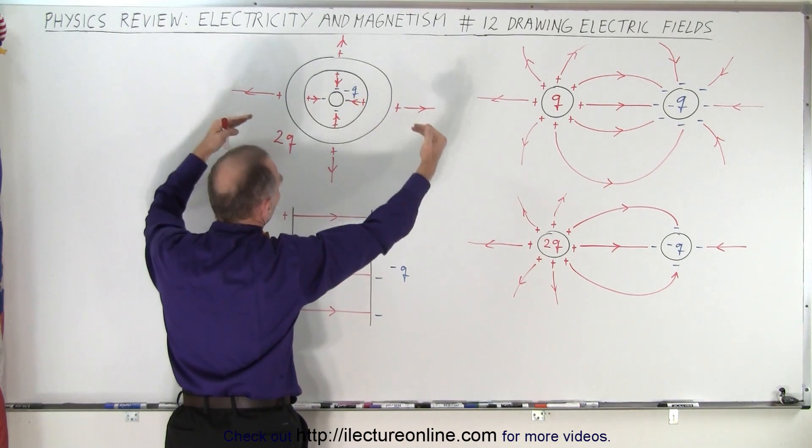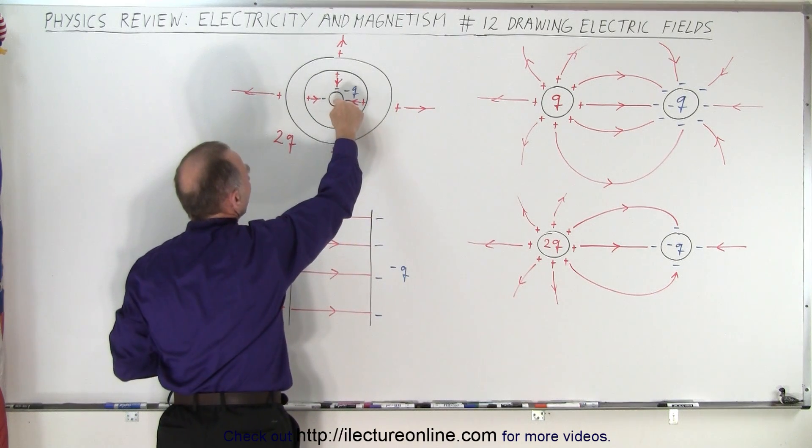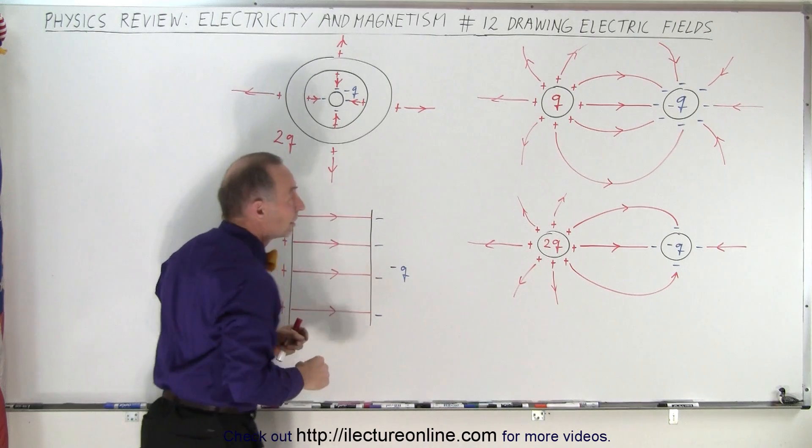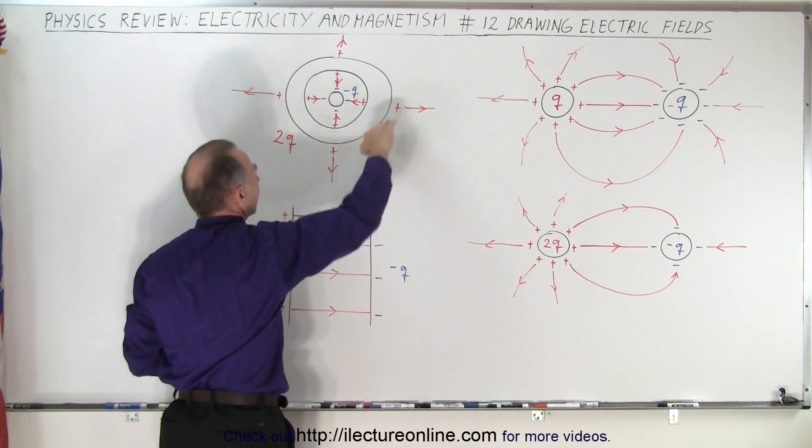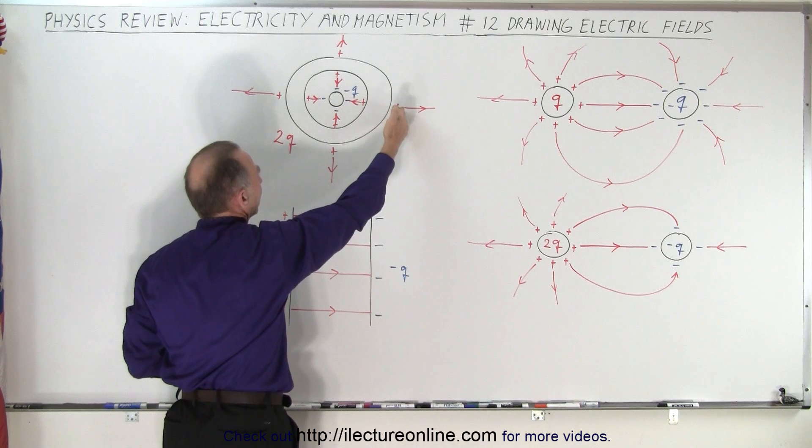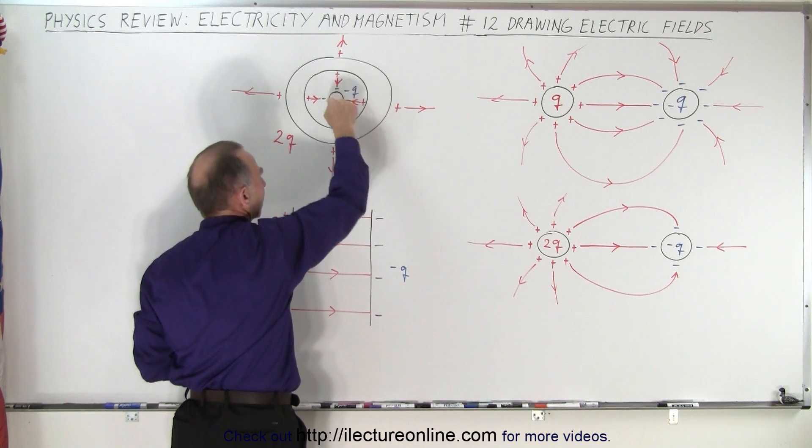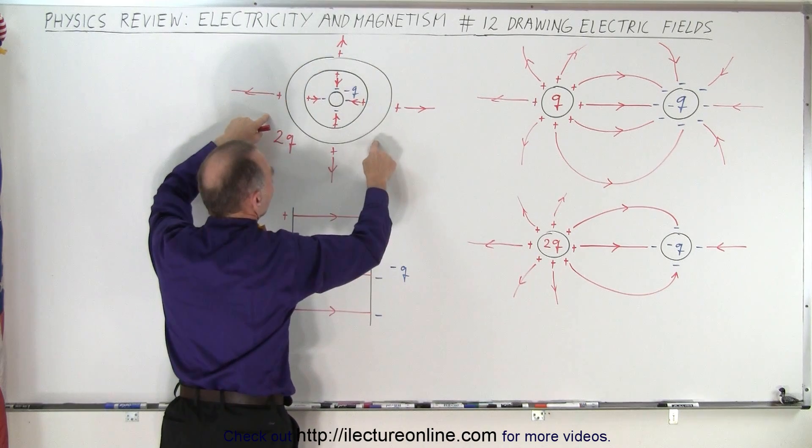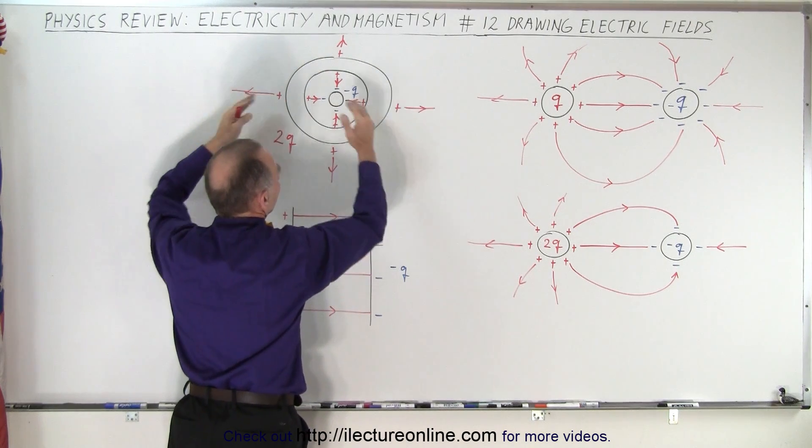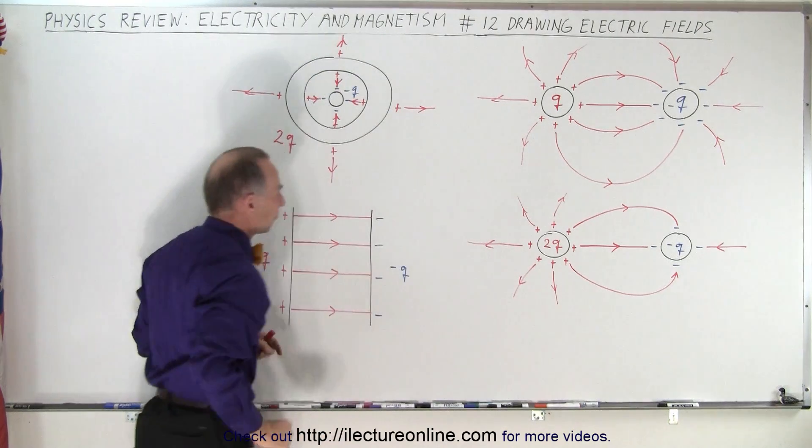So you see the lines going from positive to negative. Notice there's no electric field inside here. And there's no electric field inside of here, because the charges that are on the outside are not being attracted to the negative charges here, because that's already taken care of by these four. And those will distribute themselves on the outside surface as far away from each other as possible, and so electric field will emanate from that.